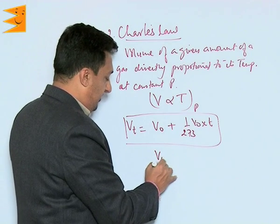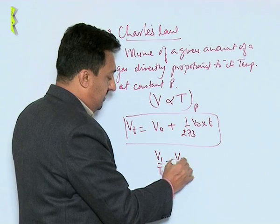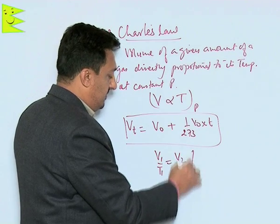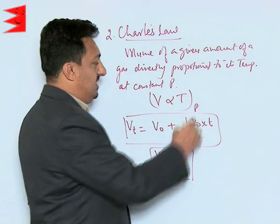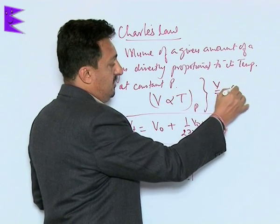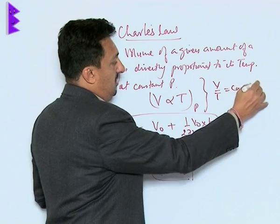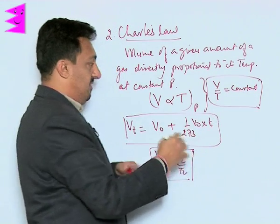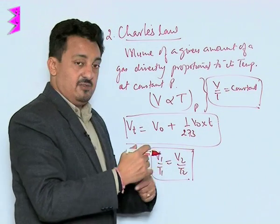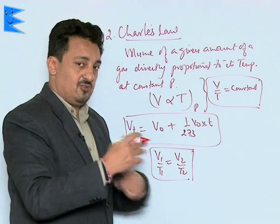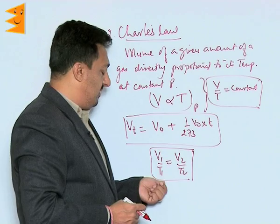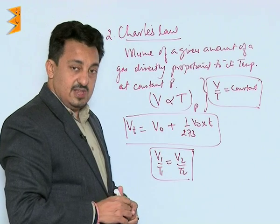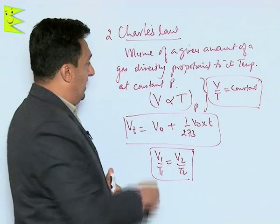V₁ over T₁ is equal to V₂ over T₂, because if you rearrange, V upon T will be your constant. Always remember whenever the gas state changes from first stage to second stage, the V by T ratio will remain the same. Therefore V₁ over T₁ equals V₂ over T₂.